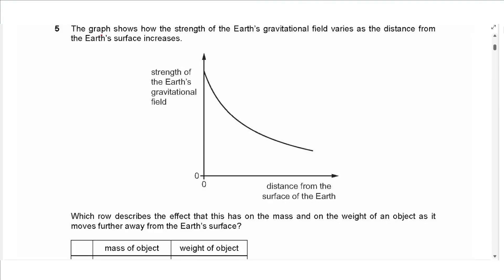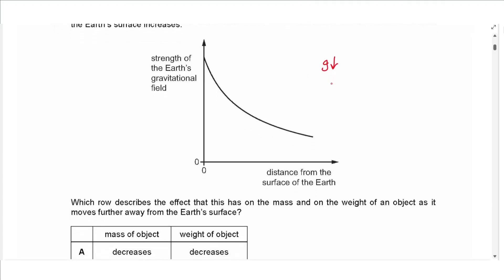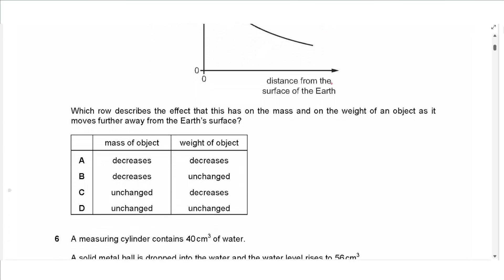Question 5: A graph shows how Earth's gravitational field strength varies with distance from the surface. As you go further from the planet, gravitational field strength decreases, so g keeps decreasing. Mass is always unchanged, but weight depends on g, and since g is decreasing, weight is also decreasing. Answer is C.